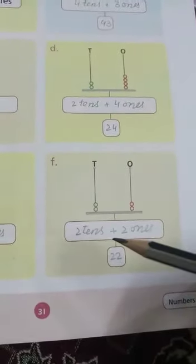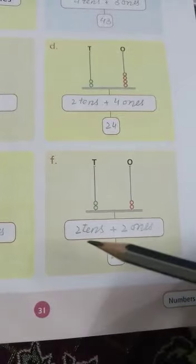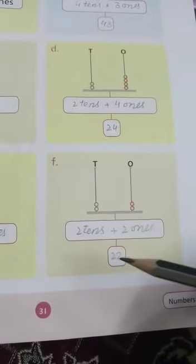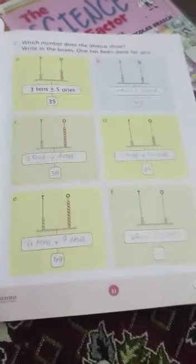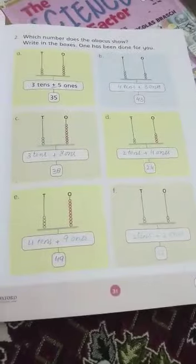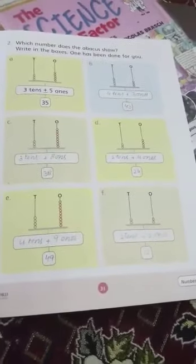And the last one: how many tenths? Two tenths. How many ones? Two ones. The plus sign, two and two — twenty-two, 22. This is easy — you can do page number thirty-one.